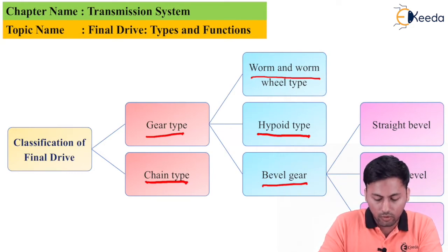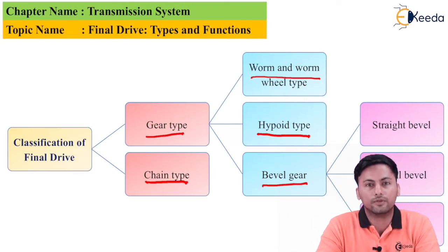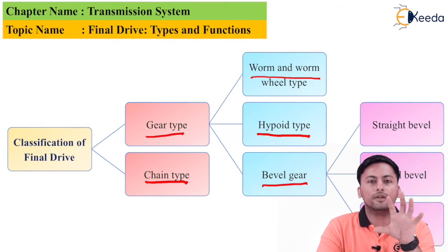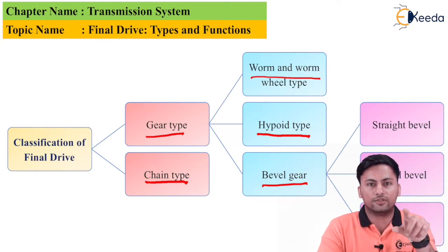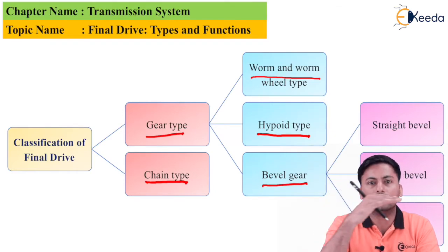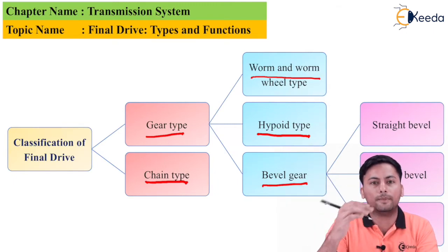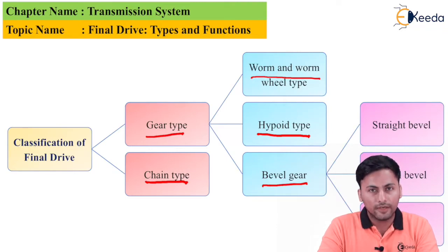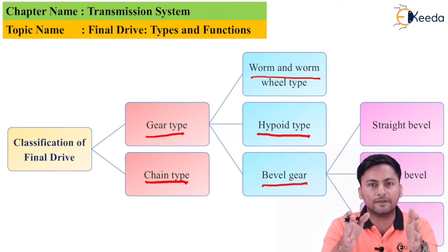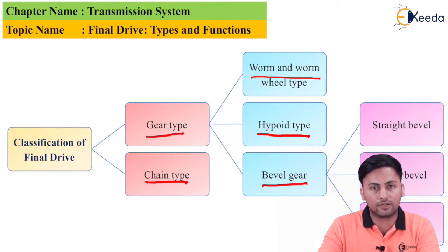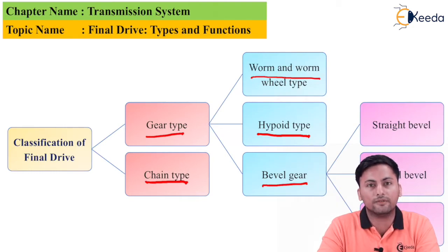When talking about the worm and worm wheel: here we have one wheel which is circular in section and one worm which is perpendicular to it. Whenever the circular disc rotates, it slides the horizontal part. The worm and worm wheel type is adopted when we have very limited space and still need to achieve the required reduction ratio.